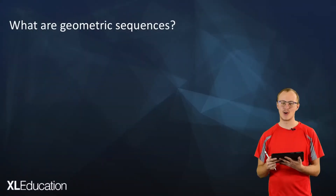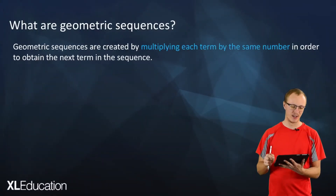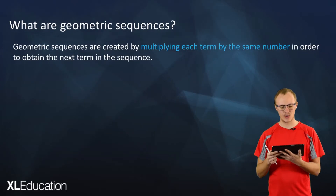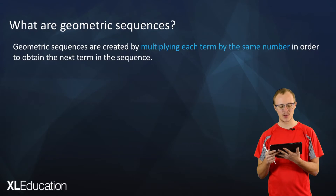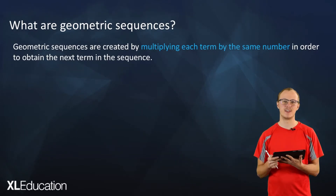Hi, it's me Heinrich and today we're going to cruise through geometric sequences and you've got a ticket so hop on board. Geometric sequences are created by multiplying each term by the same number in order to obtain the next term in the sequence.